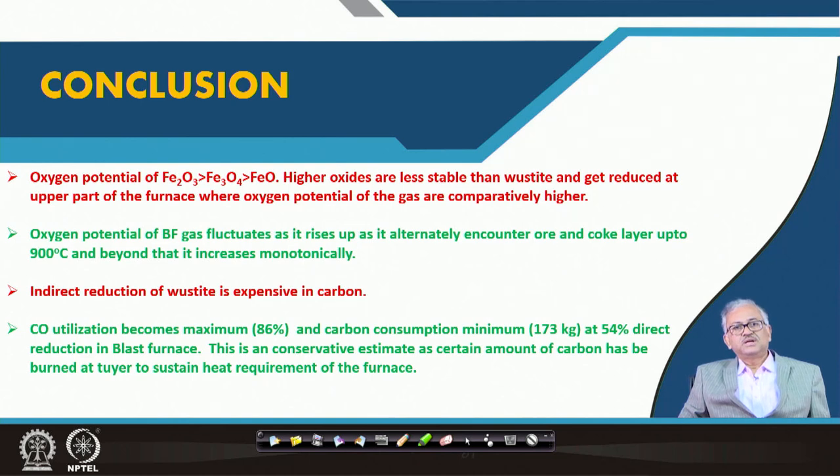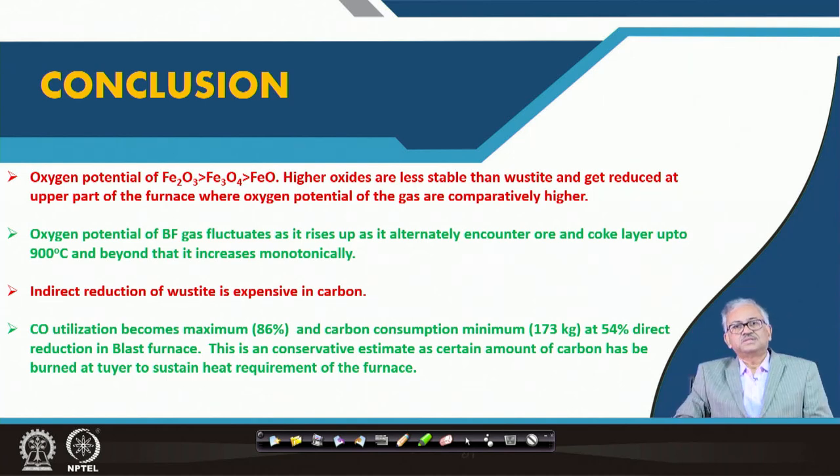This is a conservative estimate based on material balance only. A certain amount of carbon must also be burned in the blast furnace to meet the heat demand of the furnace — it is not only material balance, heat demand must also be satisfied. So some amount of indirect reduction is required for heat generation, and the actual optimum considering heat balance will involve a little more indirect reduction. In the next class, we will discuss heat and material balance in the blast furnace. Thank you.